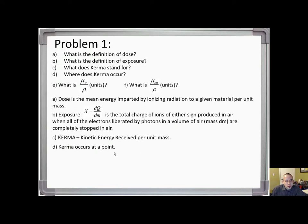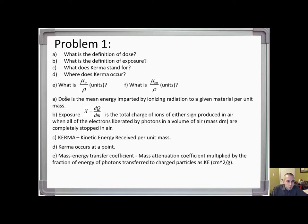For part E, what is mu_TR over rho, and give the units? It's the mass energy transfer coefficient — essentially the mass attenuation coefficient multiplied by the fraction of photon energy transferred to charged particles as kinetic energy. The units are centimeters squared per gram, the same as the mass attenuation coefficient.